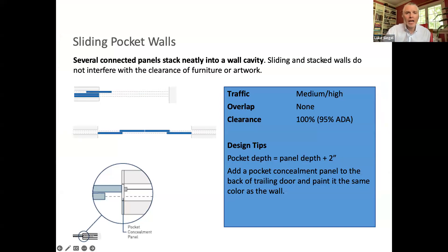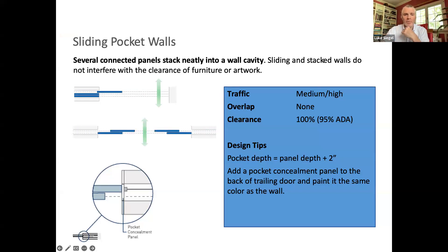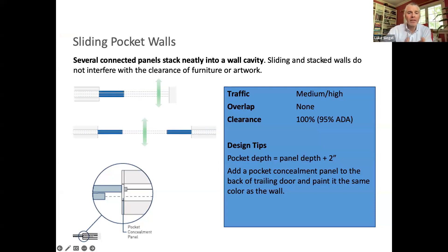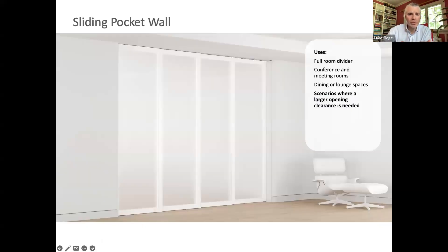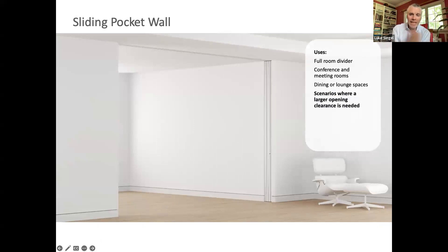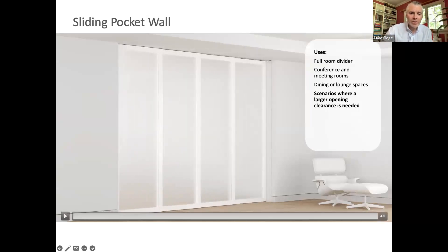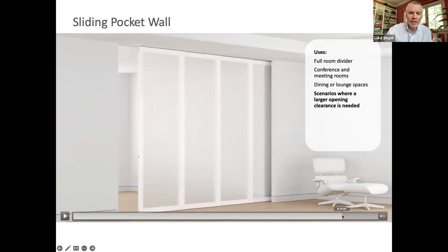Sliding walls can also disappear into a pocket — called a sliding pocket wall. Same system, still at $2,000 per panel; panels slide into the pocket and disappear. It's magical — gives you high-traffic access and you can fully flex the space, provided you have room to build that pocket. Spec the pocket two inches wider than the width of the panel. There's a pocket concealment panel — a piece of prime three-quarter-inch MDF pre-drilled and mounted to the back of the trailing panel — that closes the gap made by the other panels when they come out.